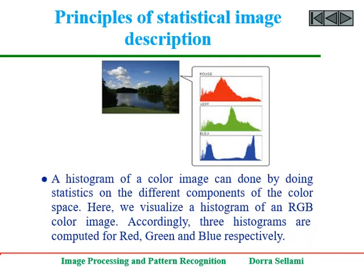A histogram of a color image can be done by computing statistics on the different components of the color space. Here we visualize a histogram of an RGB color image. Accordingly, three histograms are computed for red, green, and blue respectively.